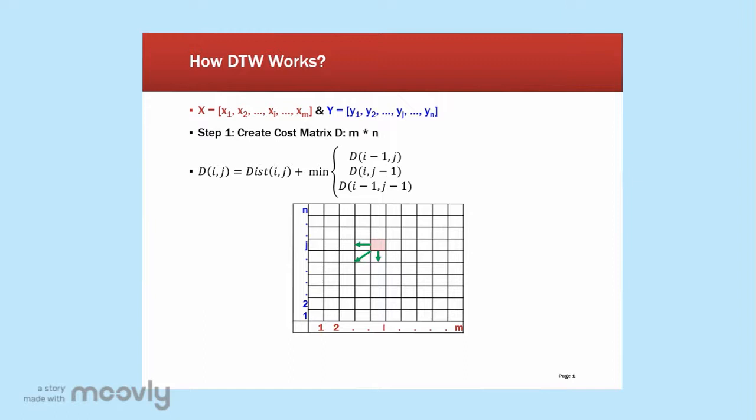So let's start with step one. Let's assume that we have a time series X which has n time units and a time series Y which has n time units. Then we would construct a matrix with a size n by n just like here.